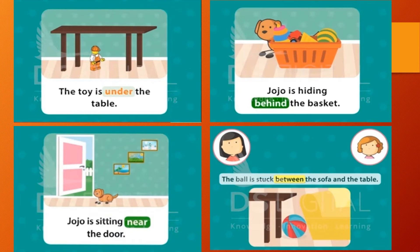The ball is stuck between the sofa and the table. Now these words — in, on, under, behind, near, between — are prepositions: words which tell us the place and position of people, animals, and things in a sentence.